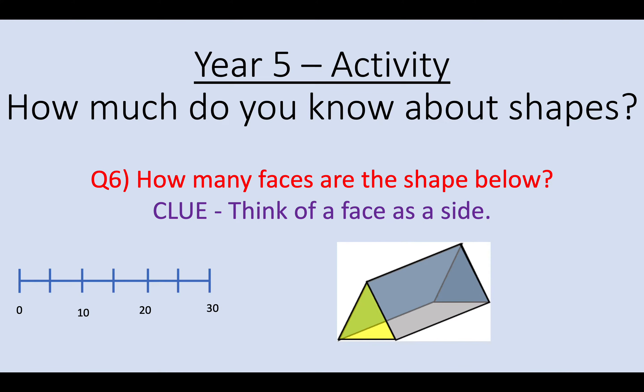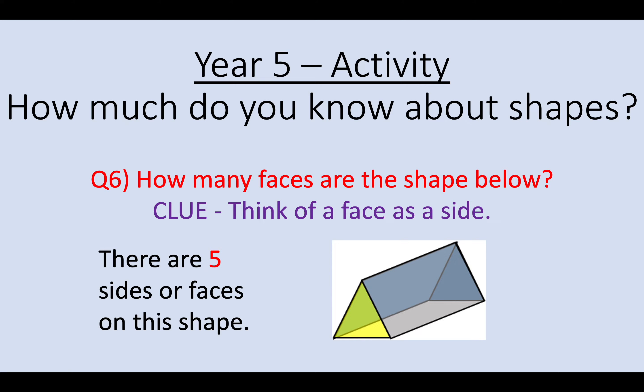Question 6. How many faces are on the shape below? Okay. So for this particular problem we have 5 faces or sides. We've got the triangle at the front. That's 1. The triangle at the back. That's 2. The base. Which is 3. The left hand side. Which is 4. And the right hand side. Giving us 5.